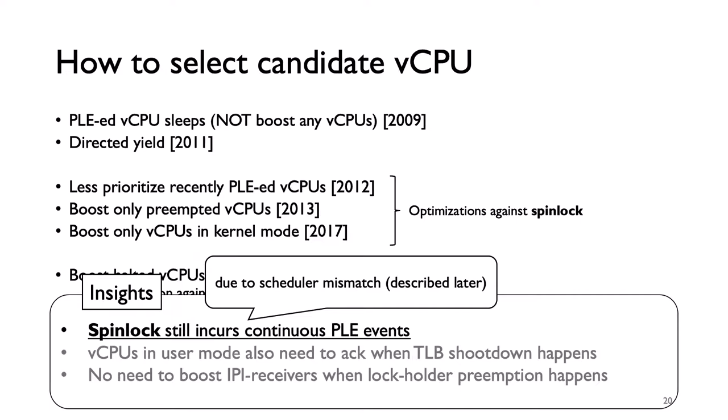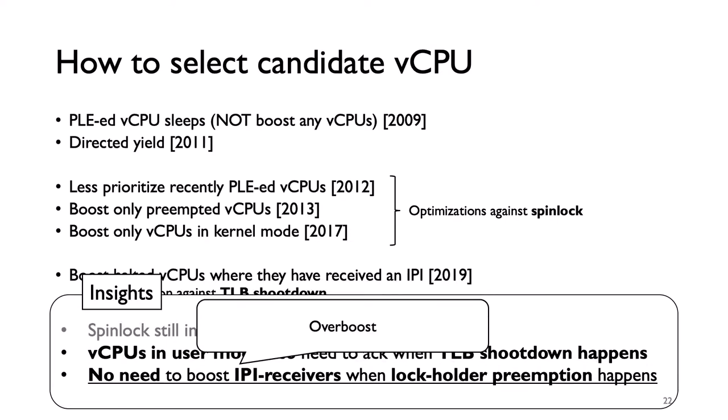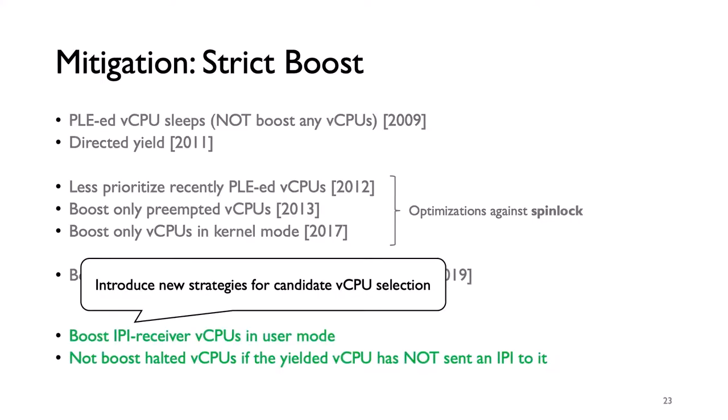The first insight is due to the scheduler mismatch problem, described later. The second is called lost opportunity in this work, and the third is called overboost. To mitigate these problems, I introduce two new candidate selection rules: one is boosting IPI receiver vCPUs in user mode, and the other is not boosting halted vCPUs if the yielding vCPU has not sent an IPI to it.